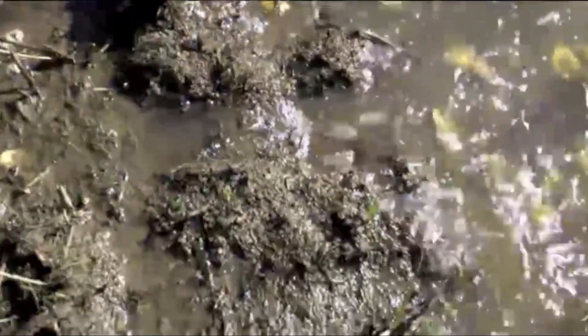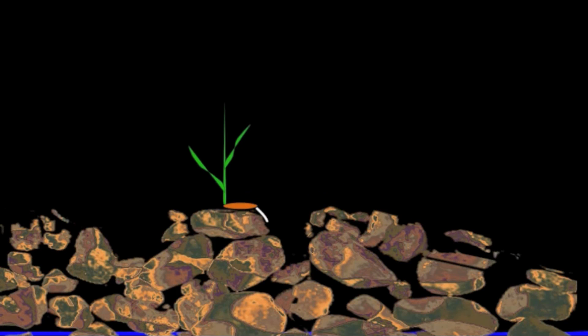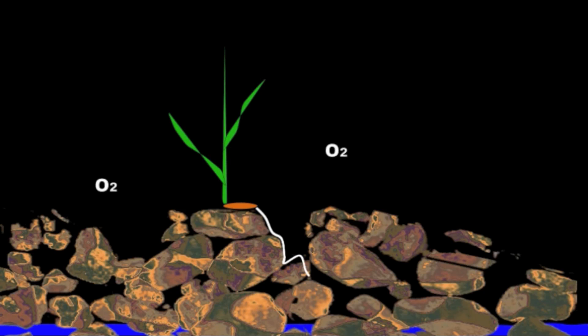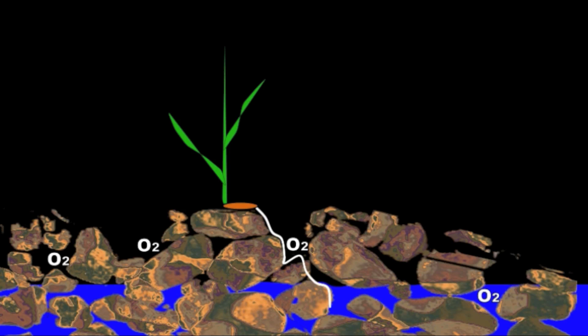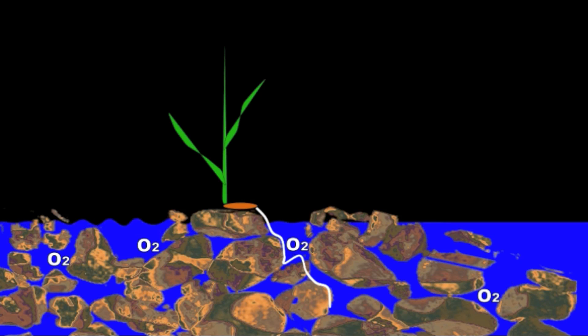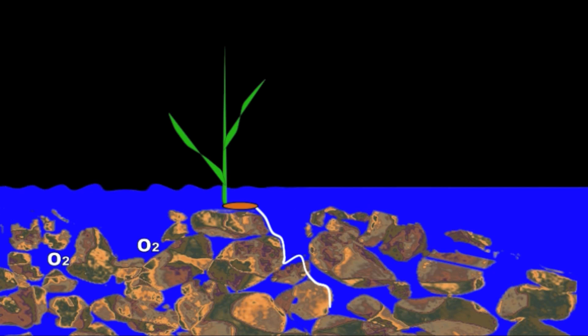Wetland plants must tolerate periodic flooding. When a plant establishes in well-drained soil, the pore spaces between soil particles are filled with oxygen. Upon flooding, however, soil pores become filled with water, and respiration of microorganisms uses up oxygen faster than it can be replaced.